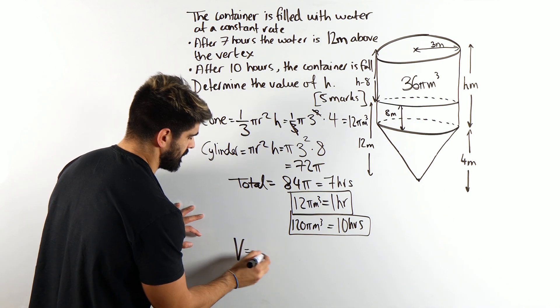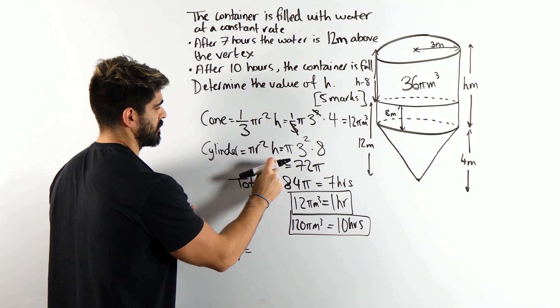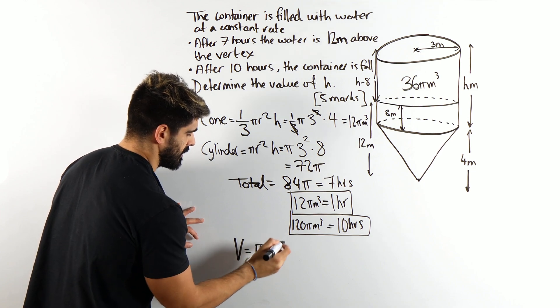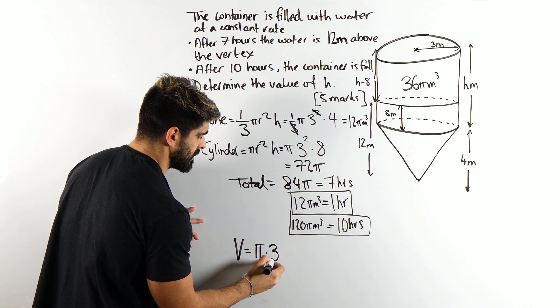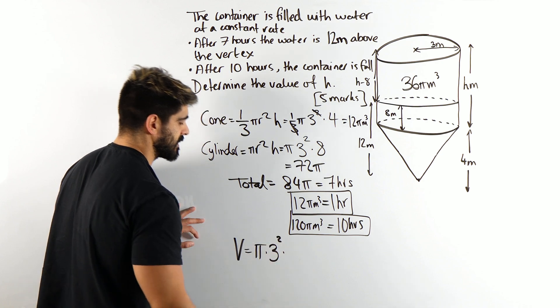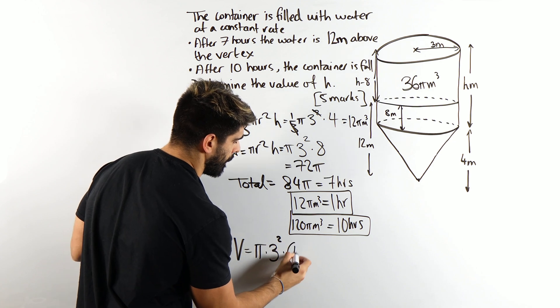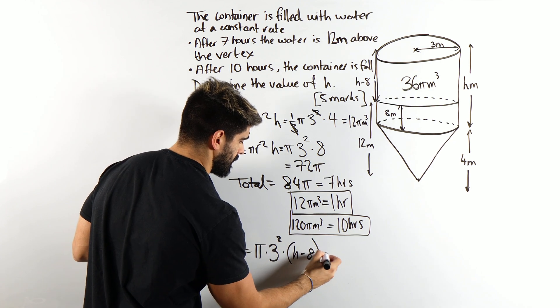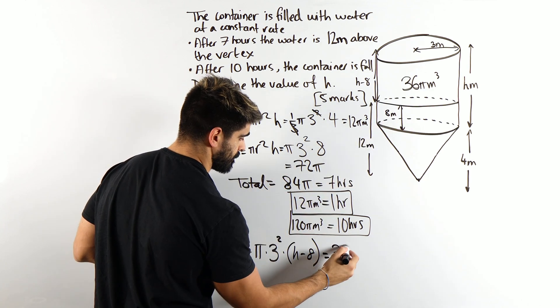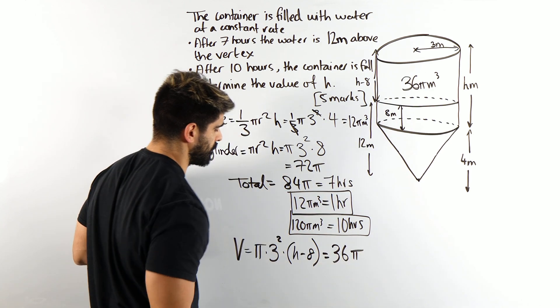So the volume is, remember the volume of a cylinder, pi r squared h. Pi times the radius of 3 squared times the height. The height is h minus 8. This equals, what was it, 36 pi. All right, beautiful.